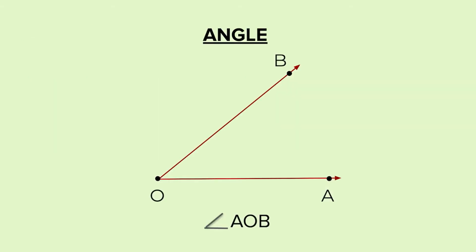First, let us look at an angle and see the various parts of the angle. OA and OB, these are the two rays which form the arms of the angle. So OA is called one arm and OB is the other arm.